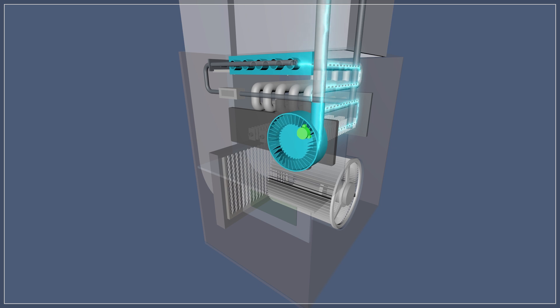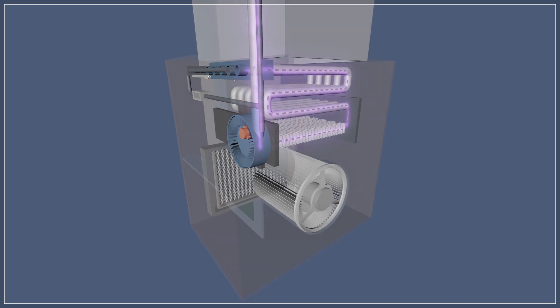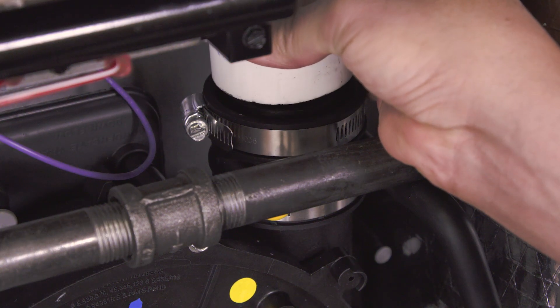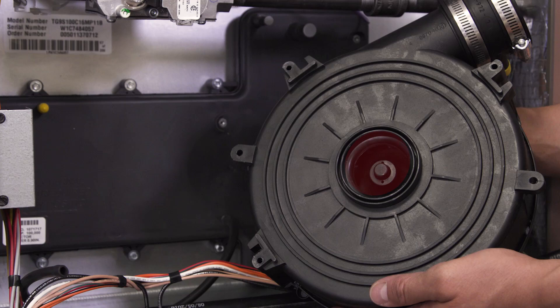If the inducer is running and there's enough airflow to remove the exhaust gases, then the pressure switch will close. When the pressure is low, the switch will stay open and will prevent the furnace from igniting. Try to identify anything that might cause a change of pressure inside the heat exchanger. Check to see if there's any obstructions in the flue vent or in the inducer motor port.